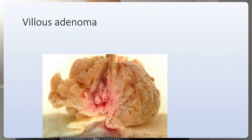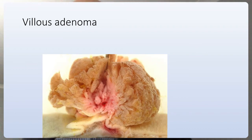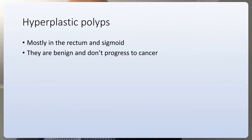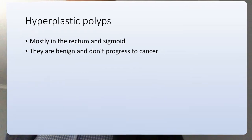The villous adenoma has a cauliflower appearance with fronds projecting from the surface — microscopically visible villi — which is why it's called a villous adenoma. It is a more serious diagnosis because the risk of progressing to cancer is higher than tubular adenoma. Hyperplastic adenomas occur most often in the colon, rectum, and sigmoid; they are benign, have no consequences, and do not develop into cancer on their own.